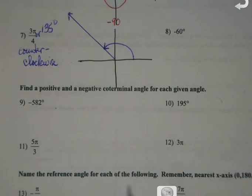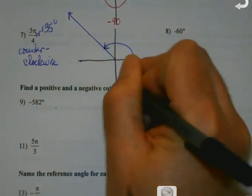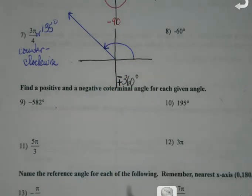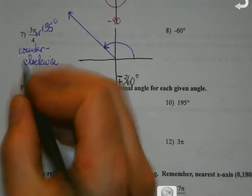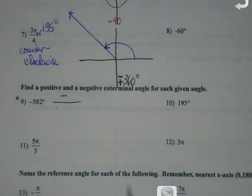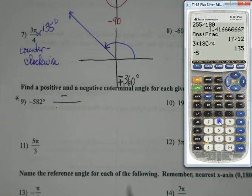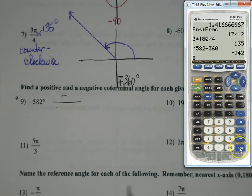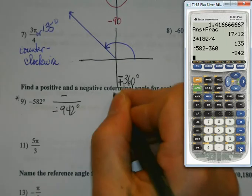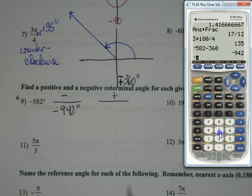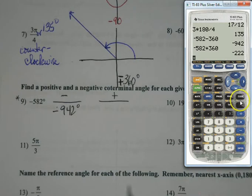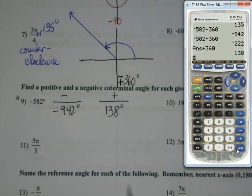Coterminal angles. Positive and negative. Coterminal. We are adding and subtracting 360 degrees to try and find these. So let's say we do one like number 9. We look at number 9 and we go, okay, so a negative coterminal. So I grab my calculator and I go, okay, so negative 582 minus 360. That is still negative so that's fine. I can use that as my negative coterminal. My positive, though, I have to be a little more cautious. Because I go ahead and I add 360 but it's still negative. A positive coterminal angle can't be negative. That'd be kind of silly. So I have to keep adding a 360 until it becomes positive. Once it's positive, I'm good.